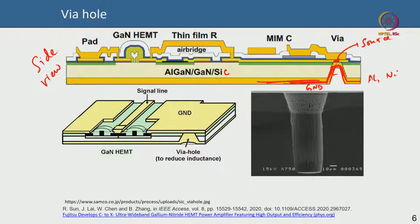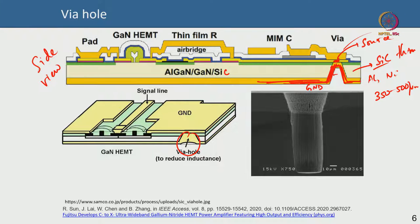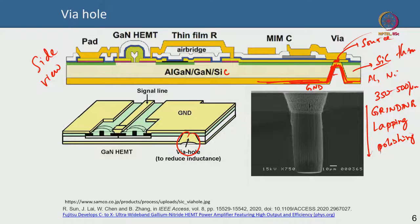All the sources are connected internally because you are connecting from the underside via the via hole. This helps reduce source inductance because you do not need to wire bond the source. The SiC substrate — typically 350 to 500 µm thick — is thinned using grinding, lapping, and polishing techniques down to about 100 µm, and sometimes even 50 µm.